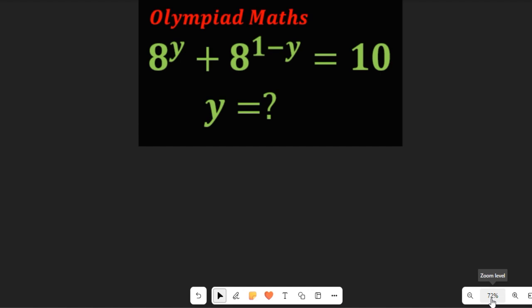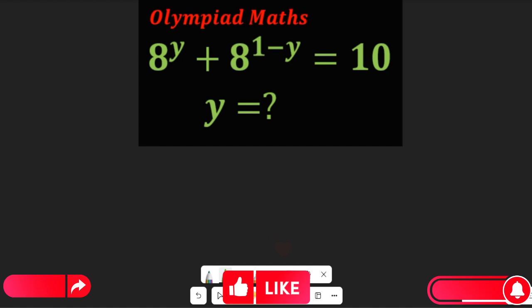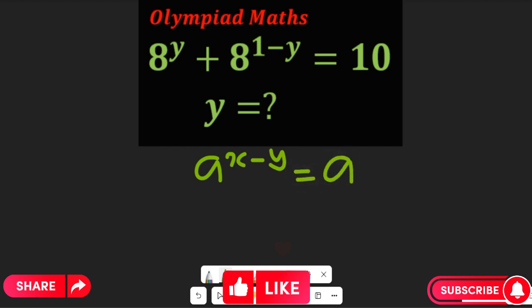Let's recall one law of indices. From that law of indices, we understand that a to the power of x minus y is equal to a to the power of x divided by a to the power of y — and that is the division law of indices.